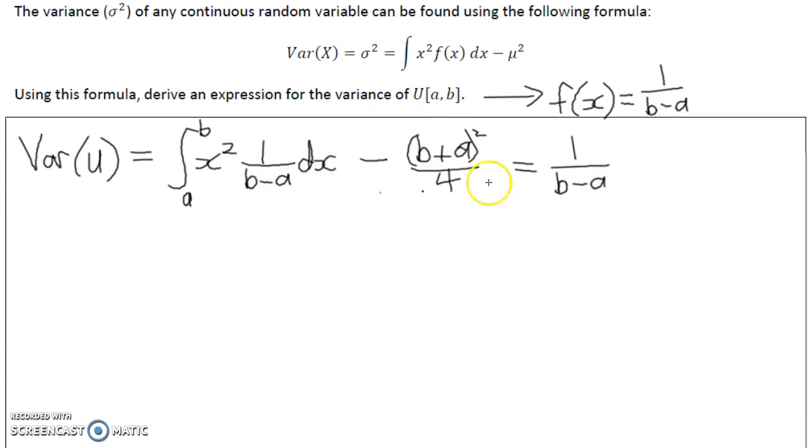So back to the integral now, we're integrating x squared, so that is a third x cubed, between limits a and b, and we're going to still be taking off b plus a all squared over 4.